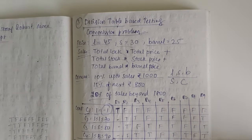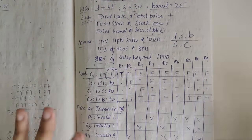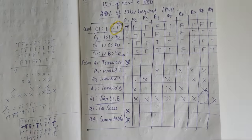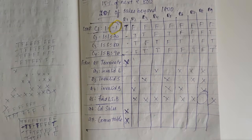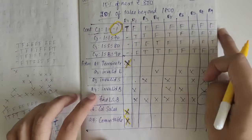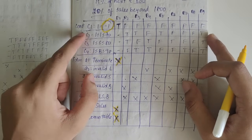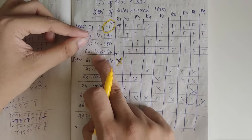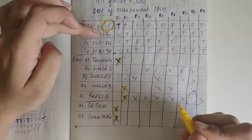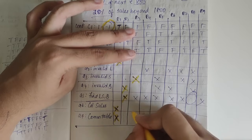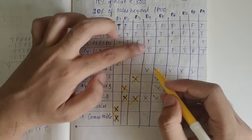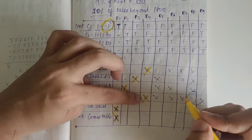For the commission problem decision table: C1 — lock equals -1 (termination). If C1 is true, terminate loop, calculate total sales and commission (X). If C2 and C3 true, C4 false — invalid barrel, calculate lock-stock-barrel. If C2 and C4 true, C3 false — invalid stock, calculate LSB. If C3 and C4 true, C2 false — invalid lock, calculate LSB. If C4 only true — stock and barrel invalid, calculate LSB. If C3 only true — lock and barrel invalid.